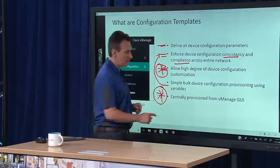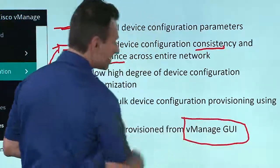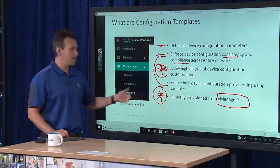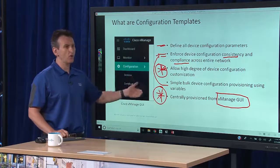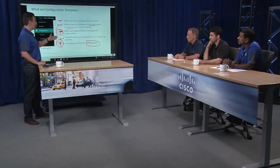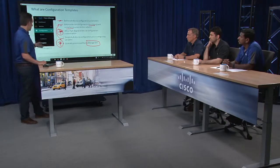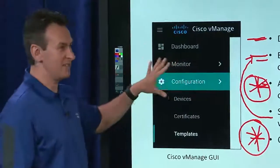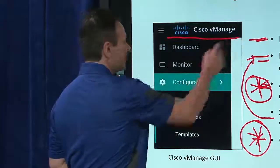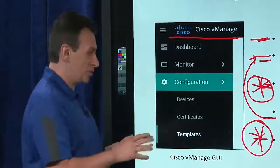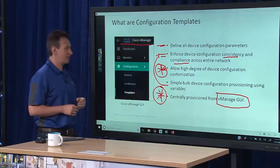We always treat the vManage graphical user interface as a single pane of glass for any operational tasks performed against the Cisco SD-WAN fabric. As you are using vManage as the single pane of glass, you want to make sure that configuration tasks are also done from the same user interface. Everything is rolled out from the configuration section of the vManage GUI. You can see a screenshot — we're going to show a short demo of how it looks inside the tool.